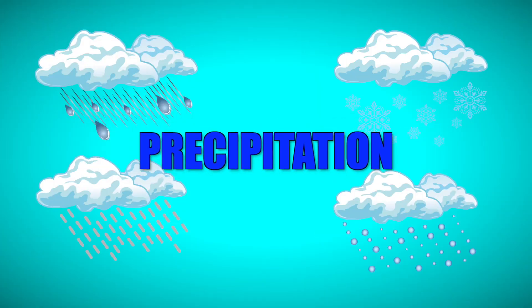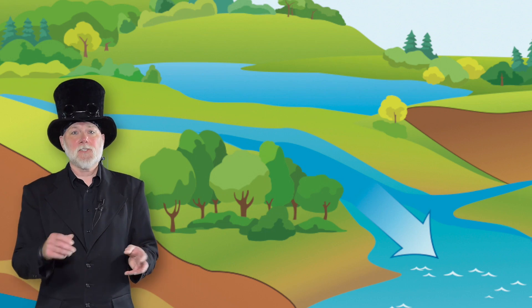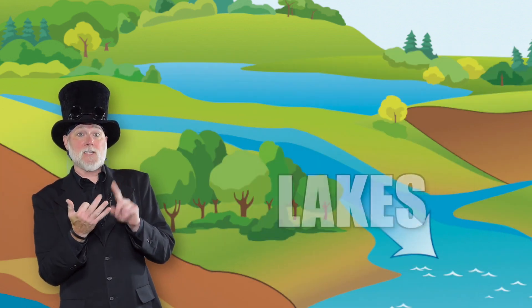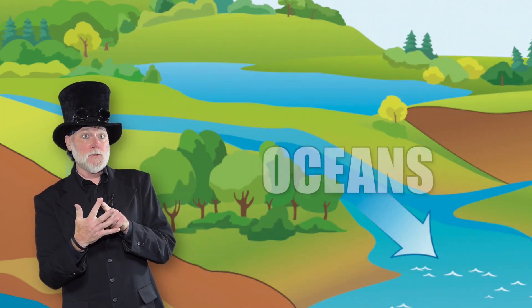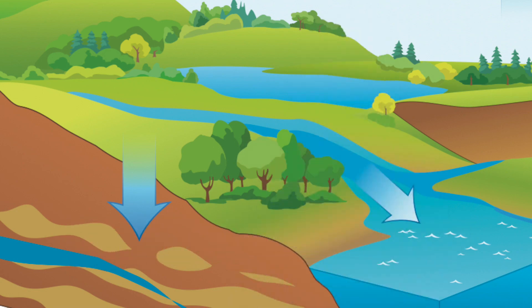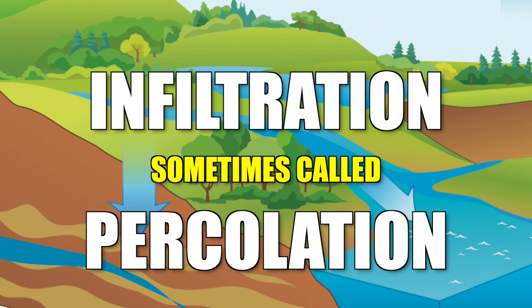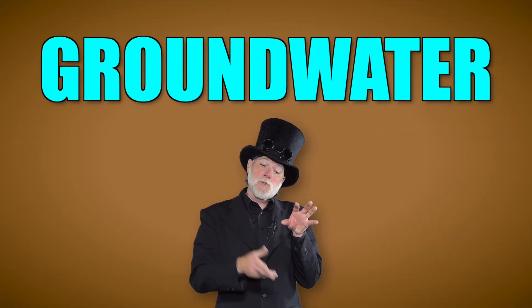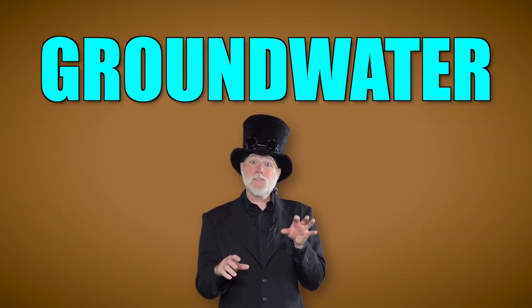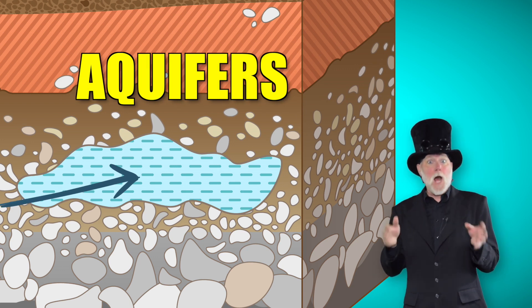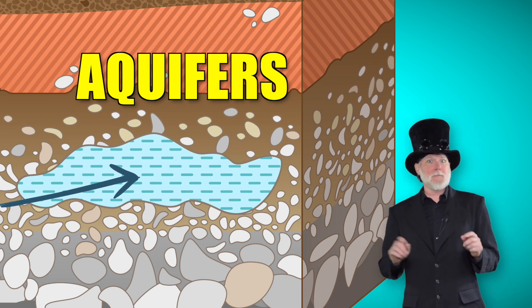Precipitation. This precipitation either runs off the surface of the earth into rivers, lakes, streams, or oceans, or the precipitation soaks right into the earth. When water soaks into the earth, it's called infiltration. Water that soaks into the earth and is stored naturally below the surface is called groundwater, stored in the small spaces between the sand and the rocks in aquifers deep below the surface.